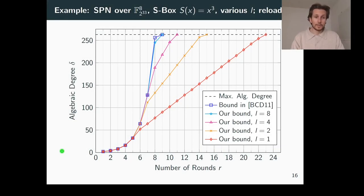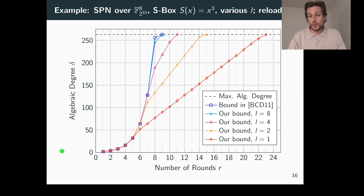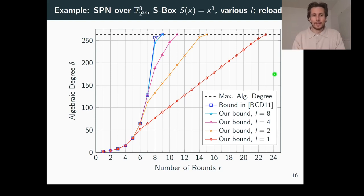Returning to the diagram from the beginning of the presentation: as observed, the degree of the linear layer helps the nonlinear layer to exhaust its exponential potential. The diagram shows that the higher the degree of the linear layer, the more the algebraic degree may grow exponentially — though the growth also depends on the concrete structure of the linear layer. Nevertheless, the point is clear: our bound helps to quantify the influence of the linear layer on the algebraic degree.